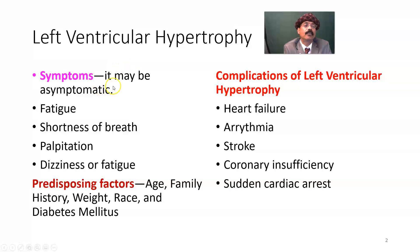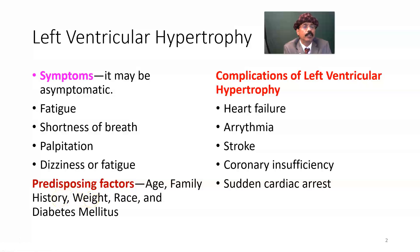Now, symptoms. It may be asymptomatic at the beginning; the symptoms develop gradually. There will be fatigue, shortness of breath, palpitation, and dizziness. Predisposing factors: it is usually a disease of the elderly or adult population. Family history of left ventricular hypertrophy may be present. Overweight persons have more chance to get left ventricular hypertrophy. For some unknown reasons, it is more common among the African American population. People suffering from diabetes mellitus also have left ventricular hypertrophy.